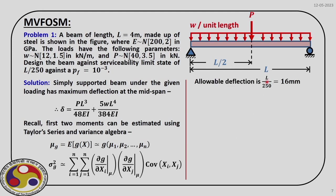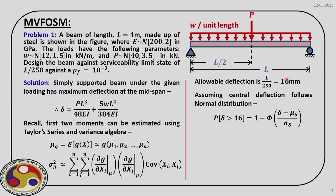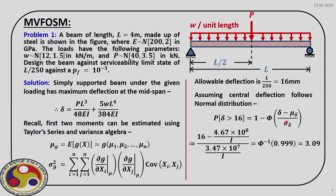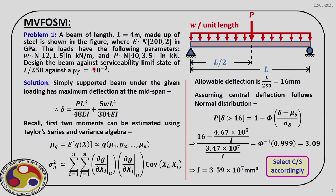The allowable deflection is L/250 = 16 mm. Assuming the central deflection follows a normal distribution, the probability of failure is defined when delta exceeds 16 mm. The probability that delta > 16 mm equals 1 minus Φ((16 − μ_delta)/σ_delta). Substituting all expressions, the only unknown is I. Solving this equation gives a moment of inertia of 3.59×10⁷ mm⁴. Selecting a beam cross-section with this moment of inertia ensures a target probability of failure of 10⁻³ under the given uncertainty.